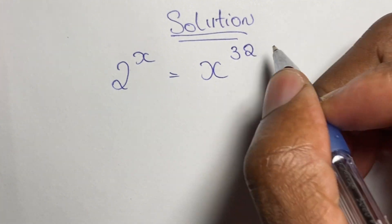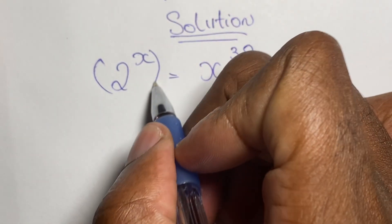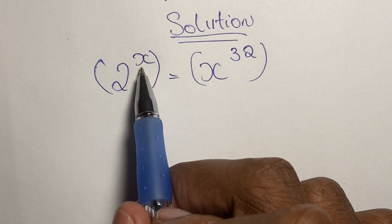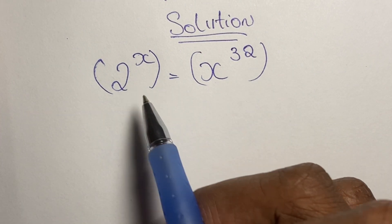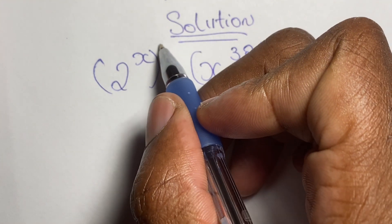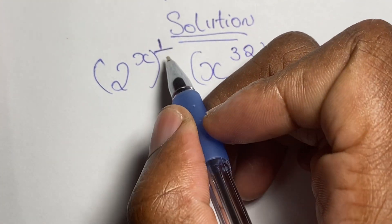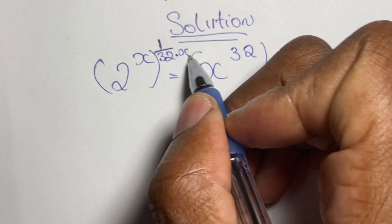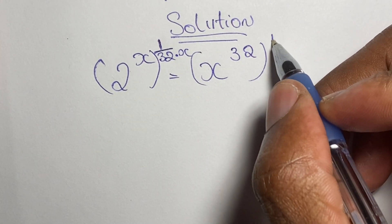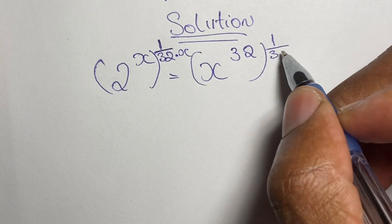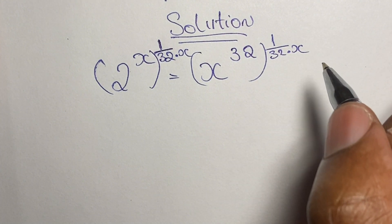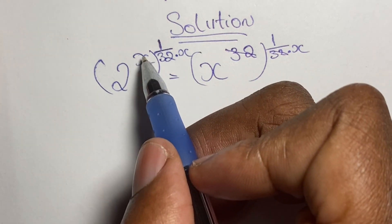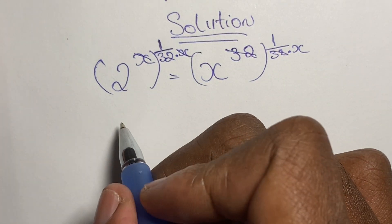Our equation states that 2 to the power of x is equal to x to the power of 32. To begin solving for x, we'll put both expressions in brackets. We bring x over to one side and 32 over to the other by raising both sides to the power of 1 over (32 times x). This cancels the 32 on the right and the x in the exponent on the left.